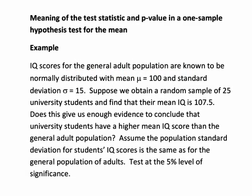In this recording we look at an example of setting out the steps for a one-sample hypothesis test for the mean, with a specific emphasis on the background to the test statistic and p-value. In this example we're told that IQ scores for the general adult population are known to be normally distributed with a mean mu equals 100 and a standard deviation sigma equals 15, and suppose we obtained a random sample of 25 university students and found that their mean IQ was 107.5.